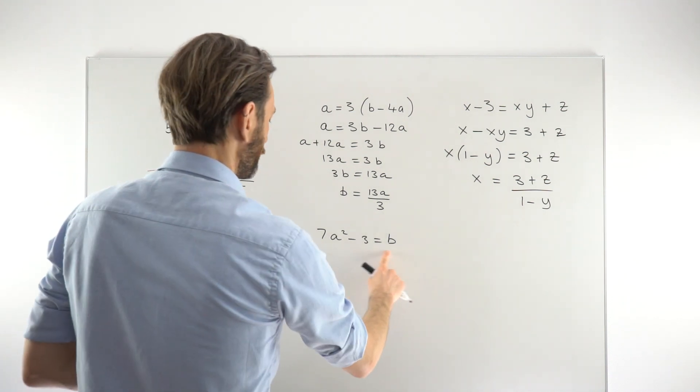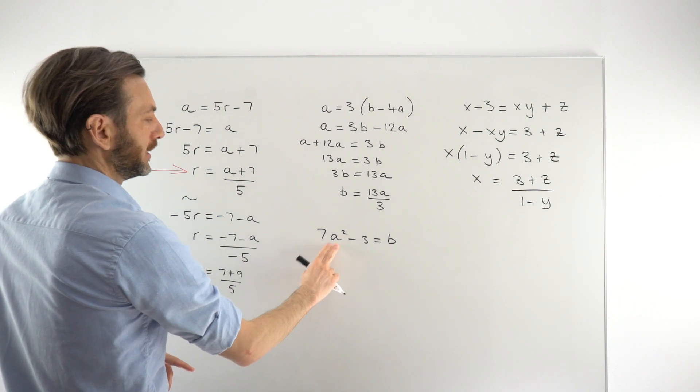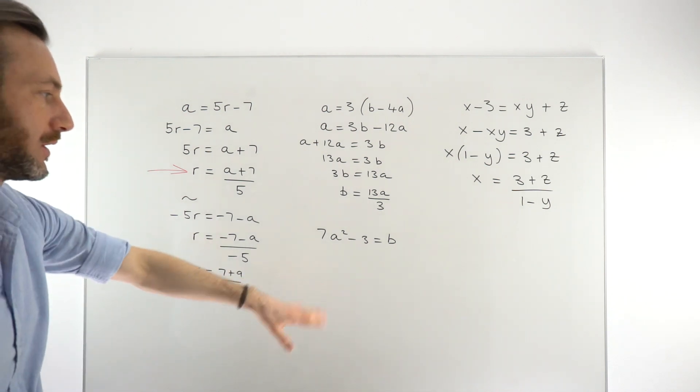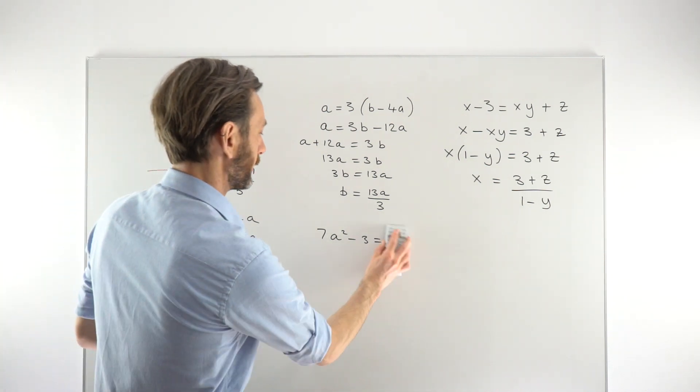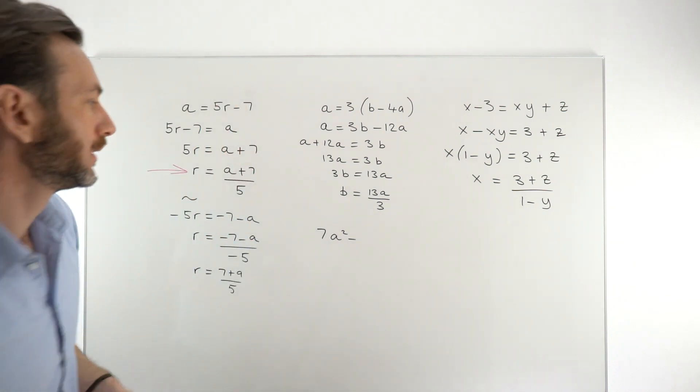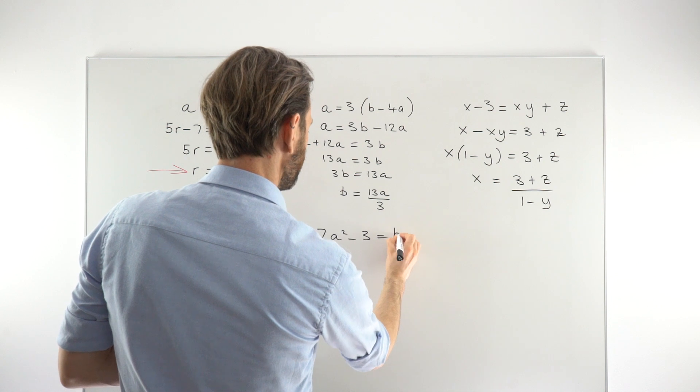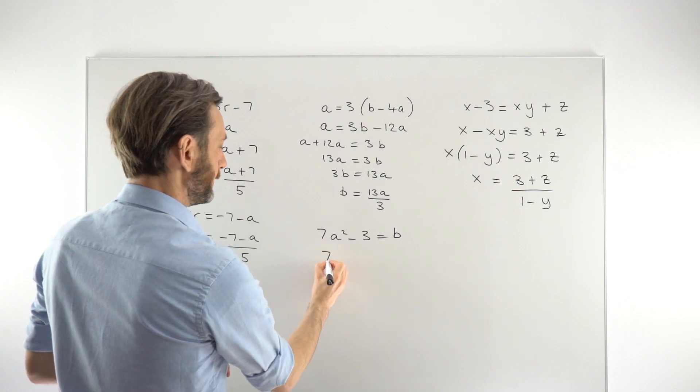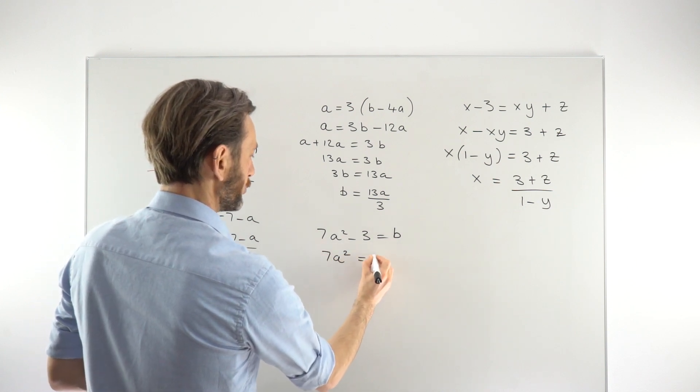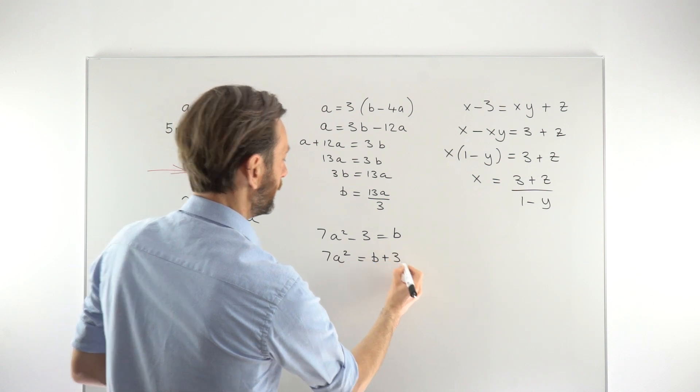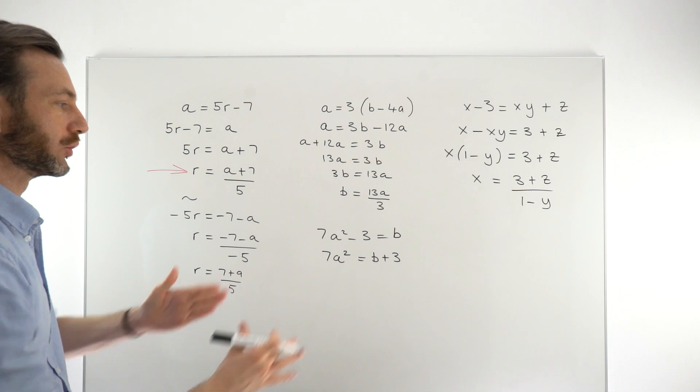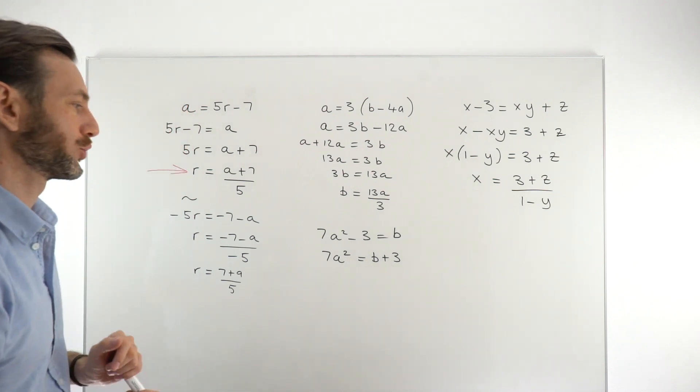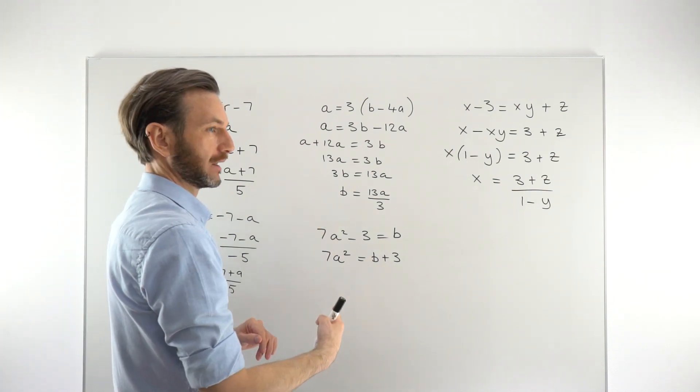Turning our attention then to this one, let's have a look at making A the subject. At the moment B is the subject—it's B equals all of this stuff. We want to flip that around to A. We've got some slightly more difficult things to deal with here, particularly the square root. So we're going to start just by moving the 3 to the other side. Learning the order in which to do things is probably the biggest challenge in this topic. You can do things in different orders, but doing them in the less than ideal order makes everything more difficult and it makes it more chance of making a mistake.